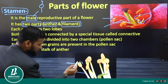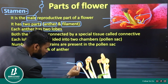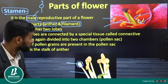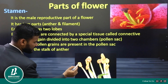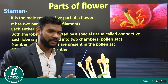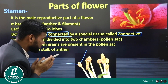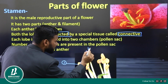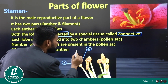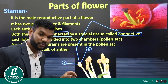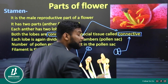Each anther has two lobes, as you can see in the diagram. Both anthers are connected by a special tissue called the connective. So this connective tissue is simply the connection between both anthers — it connects one anther to the other.